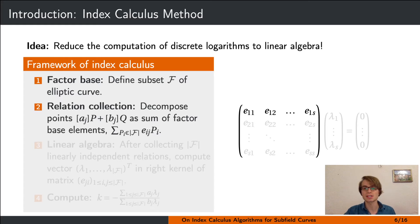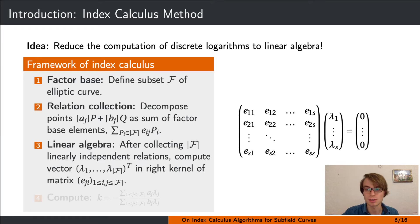We continue this relation search until we have as many linearly independent relations as there are factor base elements, and finally we can compute a vector in the right kernel of the matrix. This allows us to then compute a solution to the discrete logarithm problem in the last step.